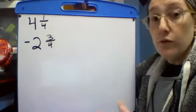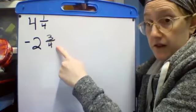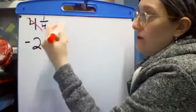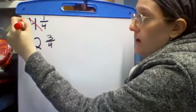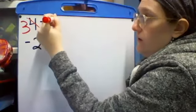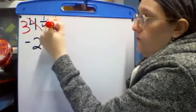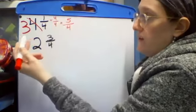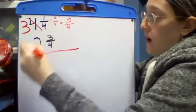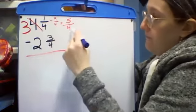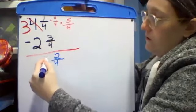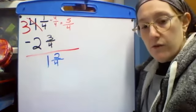So if I'm going to regroup because I only have 1/4, I don't have enough to give you 3/4. I'm going to take my 4. And instead of rewriting the whole thing on the side, I'm going to make a three here. And then next to my 1/4, I'm going to write plus 4/4, which equals 5/4. So that's the same idea as we did before, but it's a bit shorter. So now I can subtract. 5/4 minus 3/4 gives me 2/4. And 3 minus 2 equals 1. 1 and 2/4.